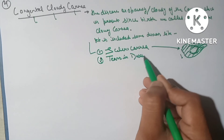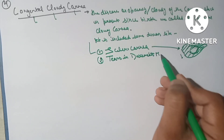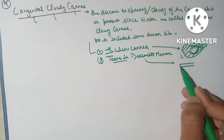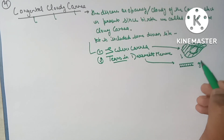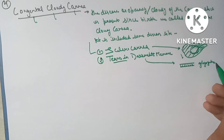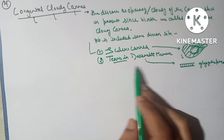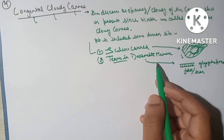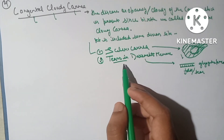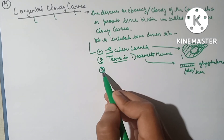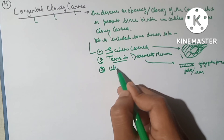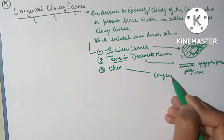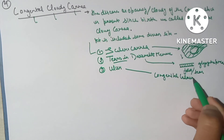The second cause is tears in the Descemet's membrane. The Descemet's membrane is a homogeneous layer made of glycoprotein. Any folds or tears present in this Descemet's membrane create cloudiness of the cornea.